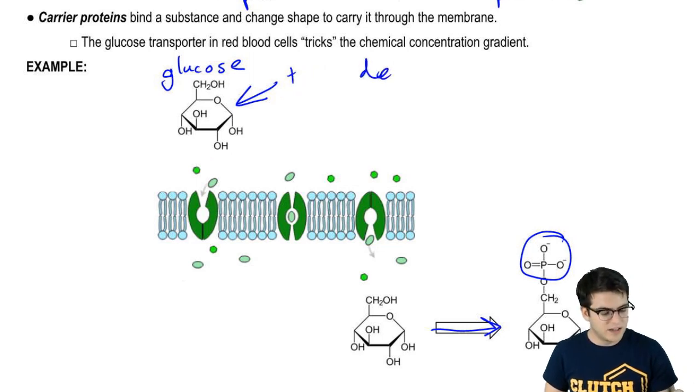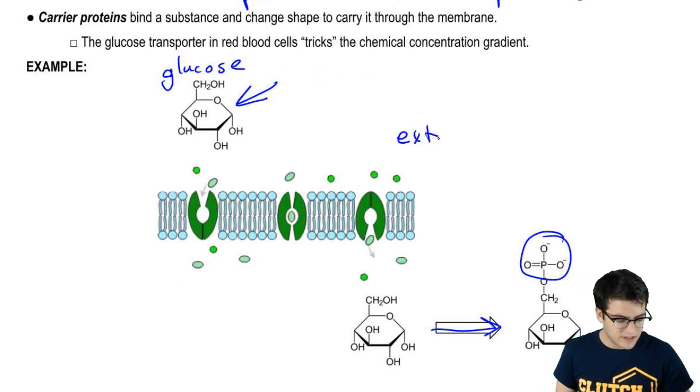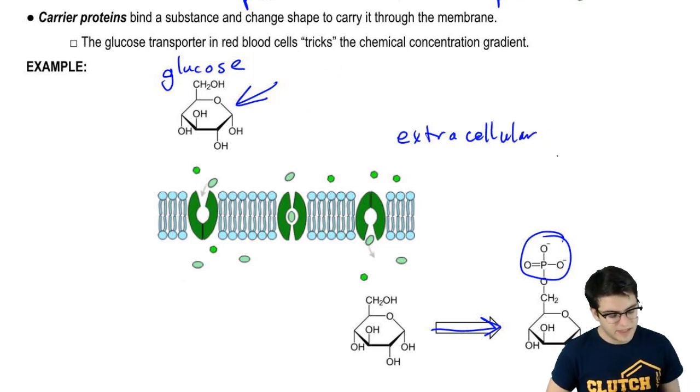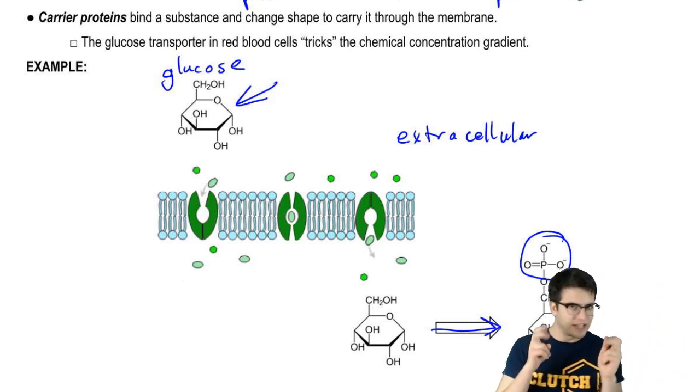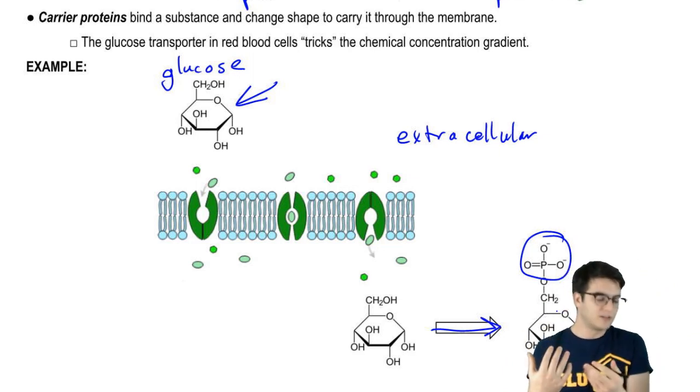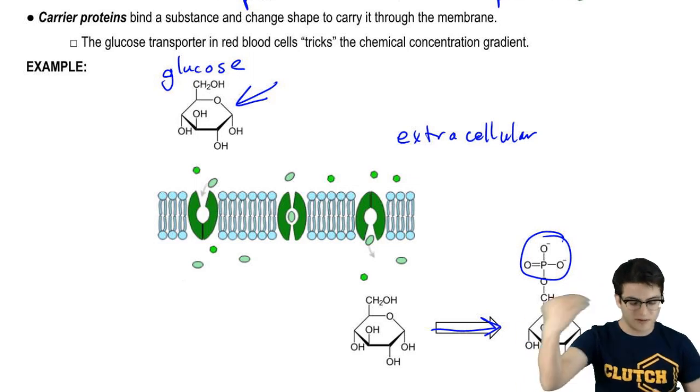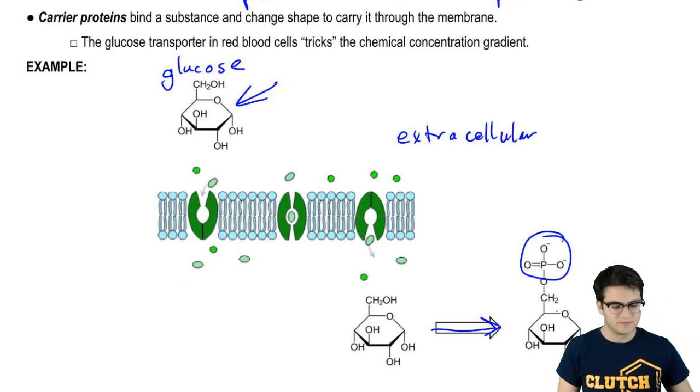Or in the extracellular environment, I should say. Because all the glucose inside the cell is not glucose, really. It's glucose 6-phosphate. So this actually kind of tricks the concentration gradient and makes it think that there's less glucose in the cell than outside. So that's going to keep that glucose coming in down its concentration gradient. All right, let's turn the page.